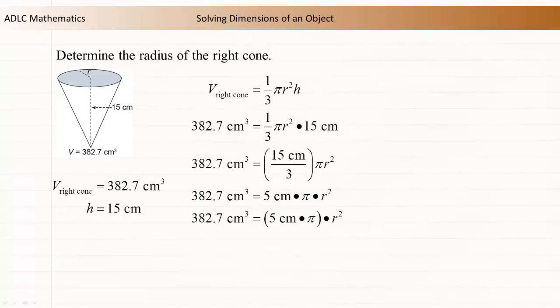Grouping the values that are known will make it easier to isolate the unknown variable r. To undo the multiplication operation, divide both sides of the equation by 5 centimeters times pi.